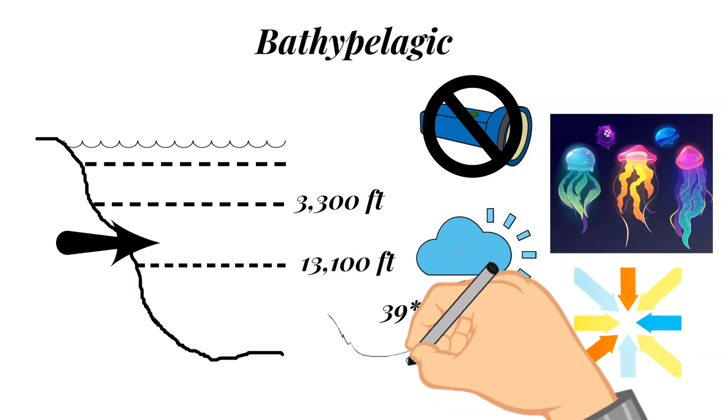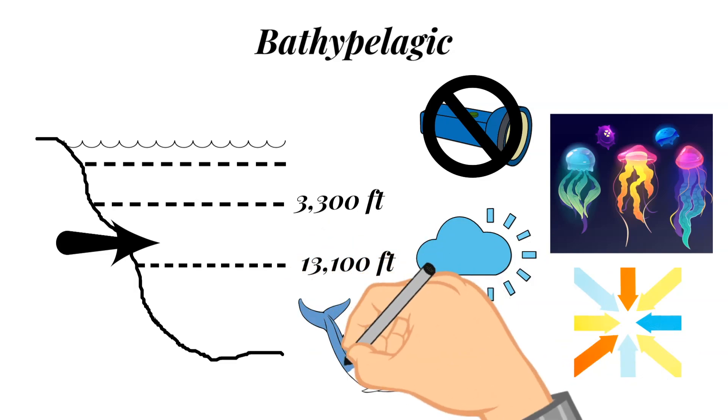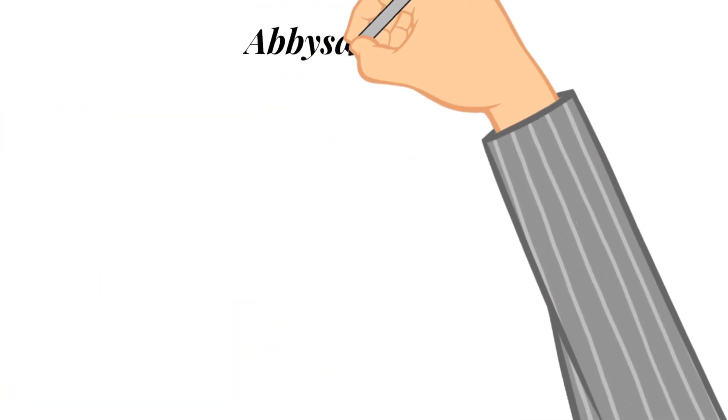The pressure in this zone is extreme and can reach up to 5,850 pounds per square inch. Even though this is the case, some sperm whales have been known to dive down to this level in search of food. And last, let's talk about the deepest zone.